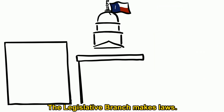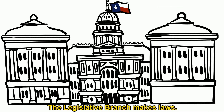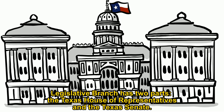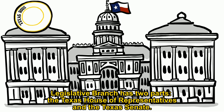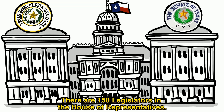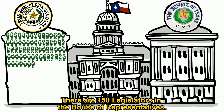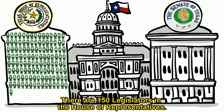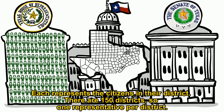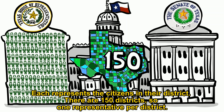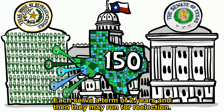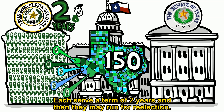The legislative branch makes laws. The legislative branch has two parts: the Texas House of Representatives and the Texas Senate. There are 150 legislators in the House of Representatives. Each represents the citizens in their district. There are 150 districts, so one representative per district. Each serves a term of two years, and then they may run for re-election.